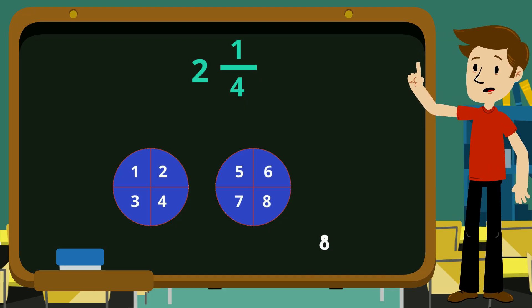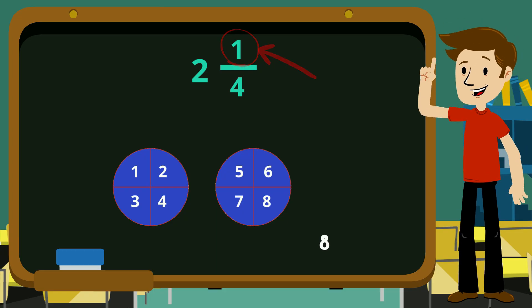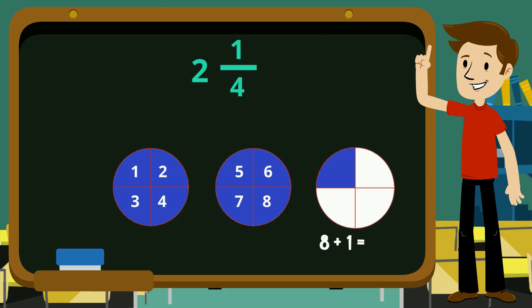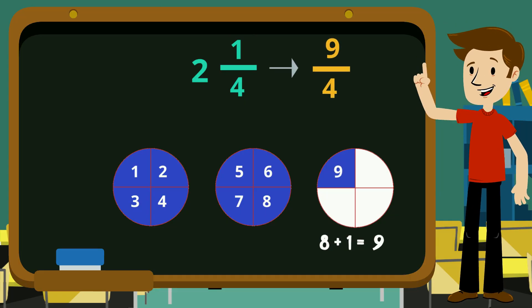Now eight quarters is simply two whole, but the mixed number shows us that as well as the two whole, there is another quarter. So we add the one quarter to our eight quarters, and this gives us our total of nine quarters.